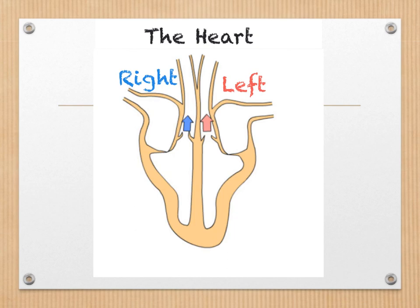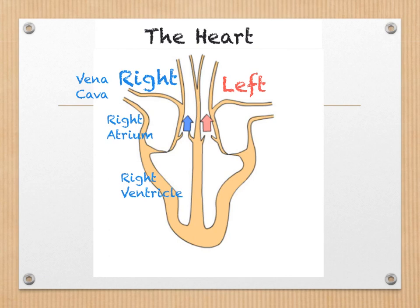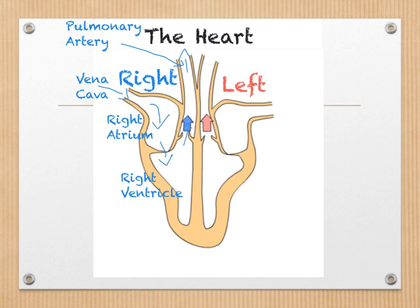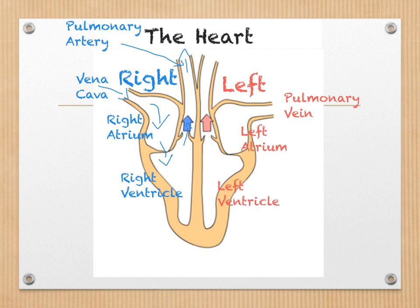Blood comes back to the heart through the vena cava before entering the right atrium. It then passes through valves to enter the right ventricle, before exiting through valves up and out through the pulmonary artery to the lungs. The pulmonary artery is significant as it is the only artery to carry deoxygenated blood. The blood returns to the heart from the lungs via the pulmonary vein — the only vein in the body to carry oxygenated blood — before entering the left atrium. It then passes through valves into the left ventricle, before exiting out to the rest of the body via the aorta, which is the largest artery in our body.